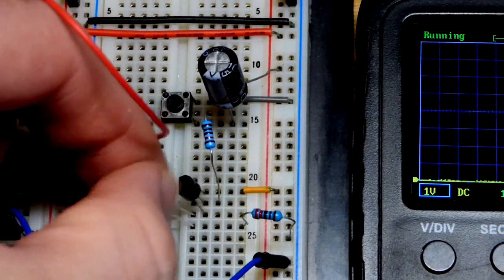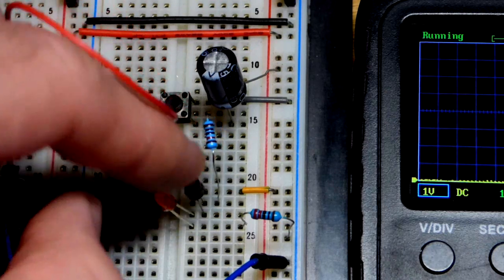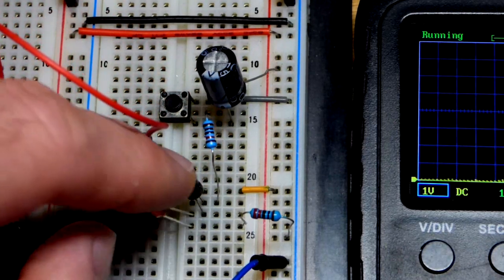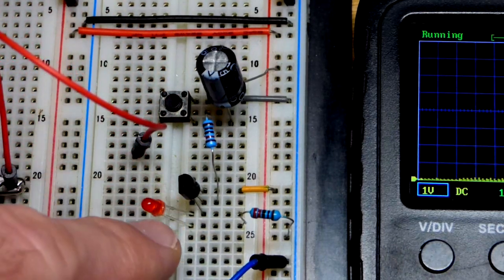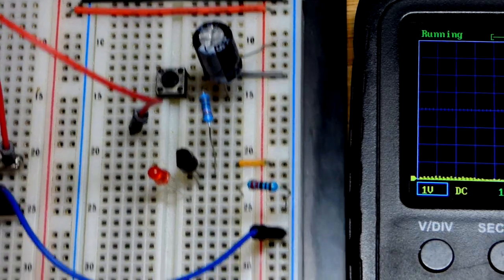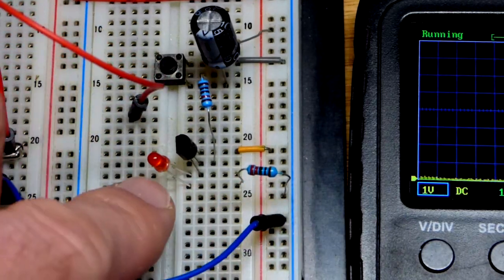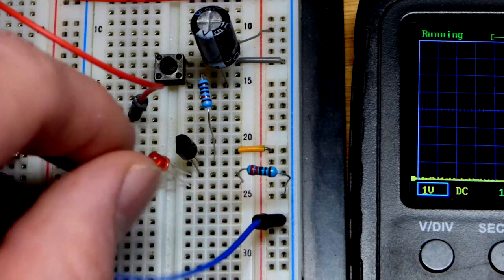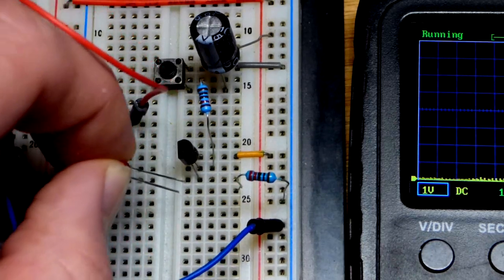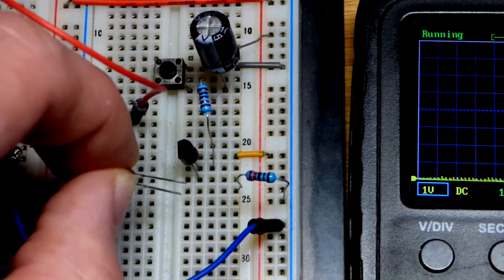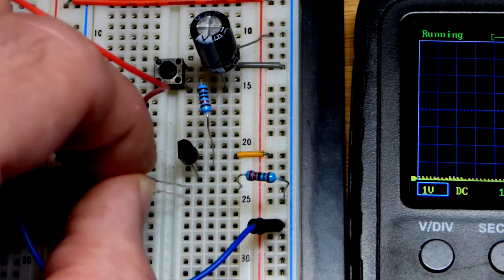The PNP bipolar junction transistor emitter is up there now, so it's facing the other way that the NPN bipolar junction transistor was. The load is on the other side of the circuit towards the more negative side. Always remember to put the LED in the right way: long lead, the anode, towards positive; short lead, the cathode, towards negative.